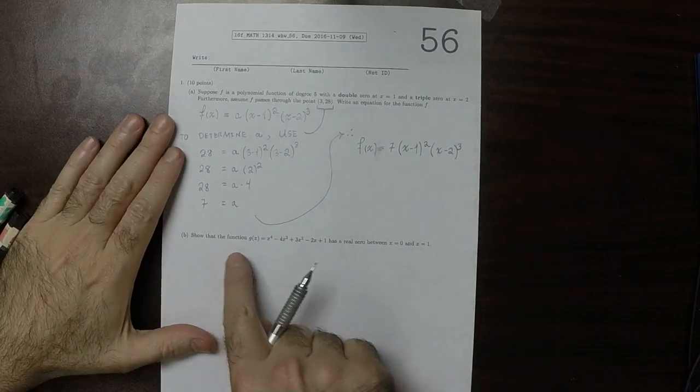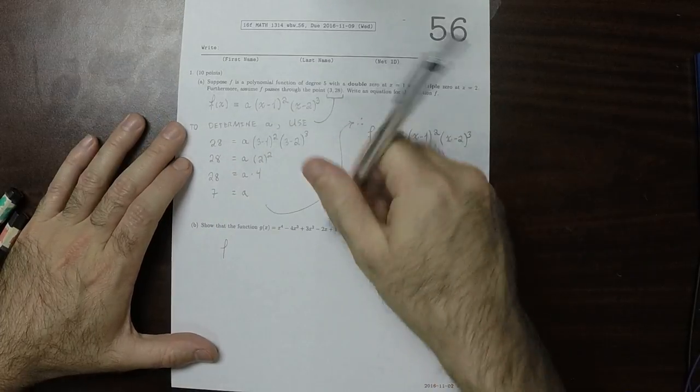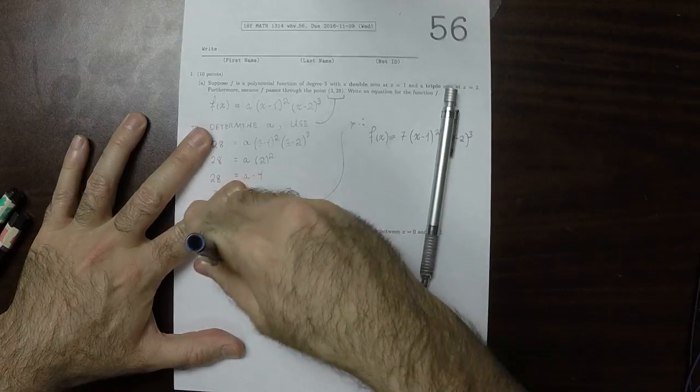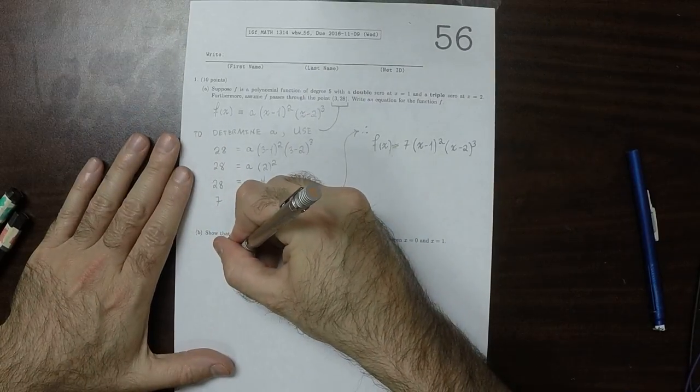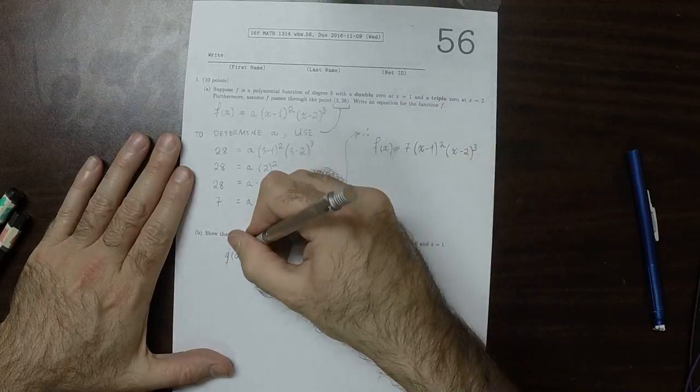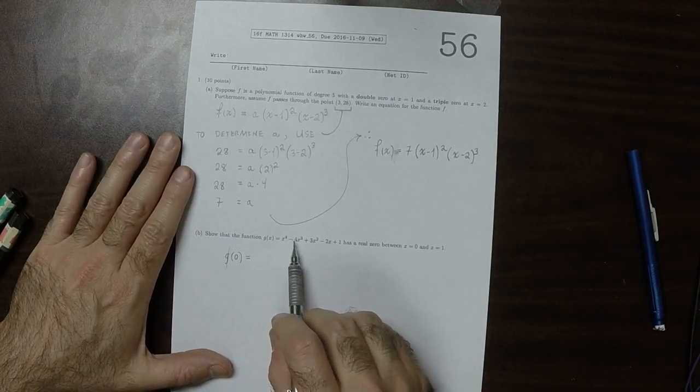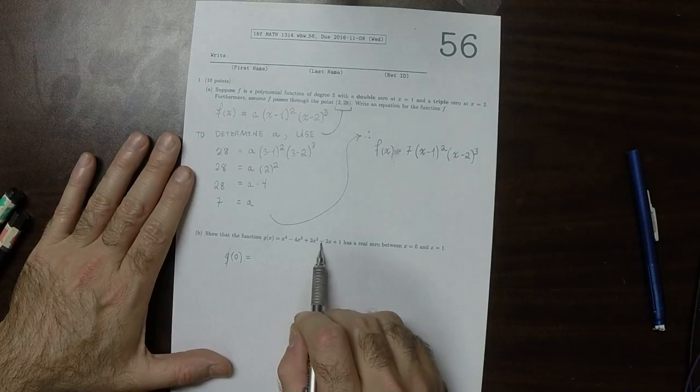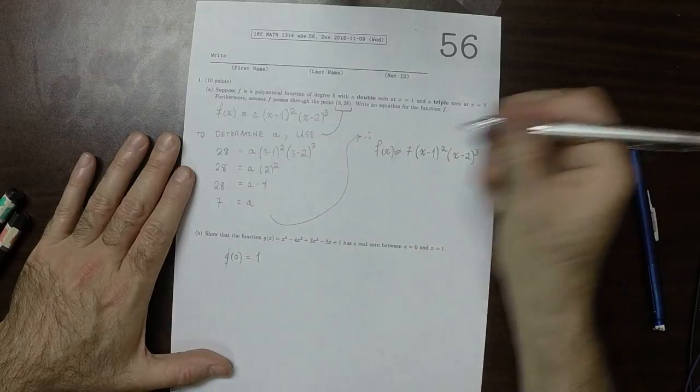Show that the function has a real zero between 0 and 1. Well, notice that if you plug in 0, so g evaluated at 0 is, well that'd be 0 minus 0 plus 0 minus 0 plus 1. So if you plug in 0, you get 1.